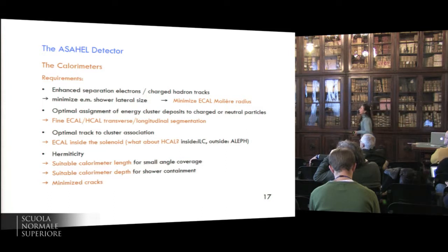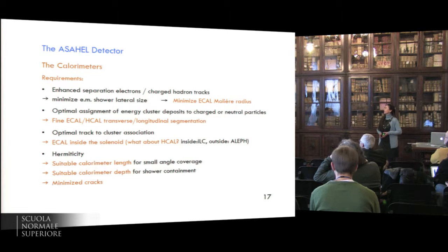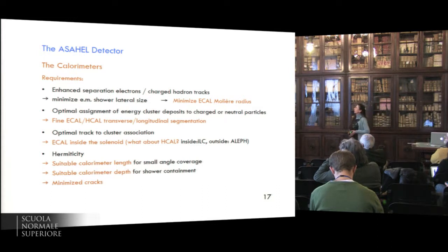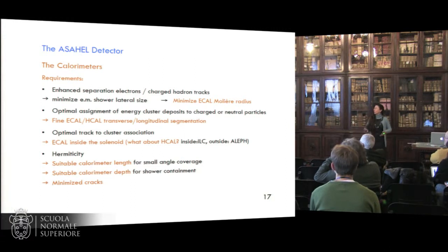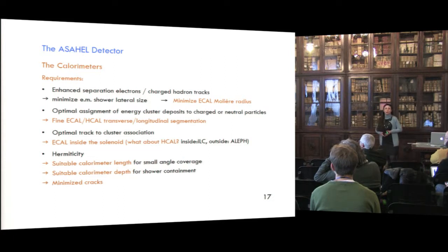For the calorimeters, for the ECAL, the requirements are to enhance the separation of electrons and charged hadron tracks by minimizing the electromagnetic shower size, that means minimizing the ECAL Moliere radius. It requires also optimal assignment of energy clusters deposited to charged or neutral particles. This means fine ECAL and HCAL transverse and longitudinal segmentation. When it's also optimal track-to-cluster association, this means ECAL inside the solenoid, but what about the HCAL? We also need hermeticity, which means suitable calorimeter length for small angle coverage and suitable calorimeter depth for shower containment. And also, we have to minimize cracks.